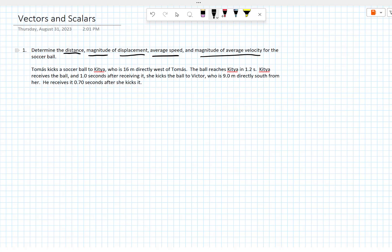Kitya receives the ball and 1.0 seconds after receiving it, she kicks the ball to Victor, who is 9.0 meters directly south from her. He receives it 0.70 seconds after she kicks it, and we're going to find all those quantities for this motion.